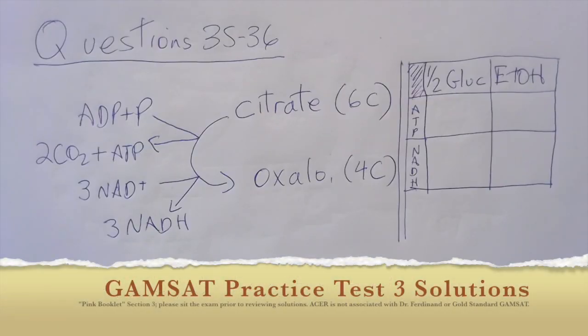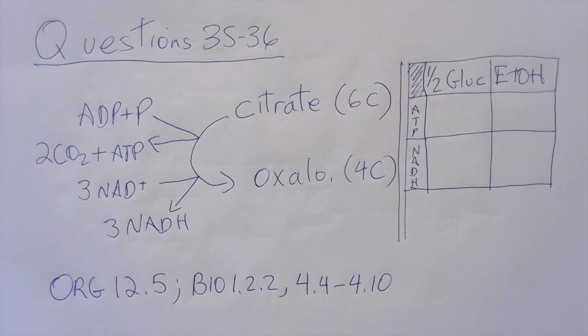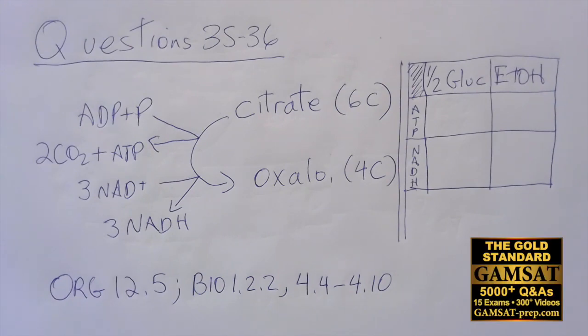Questions 35 and 36. In this question we have a very short passage but a beautiful flowchart summarizing key energy transfer steps in the oxidation of glucose and ethanol. What's not being said, which we can clearly see, is that this is glycolysis, the Krebs cycle, and the electron transport chain.